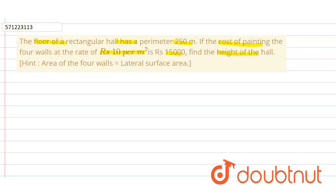It's in the shape of a cuboid. We are given that the perimeter of floor is equals to 250 meters, which is equals to 2(l + b), where l is the length and b is the breadth.